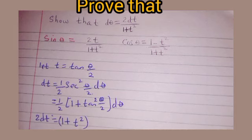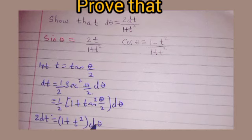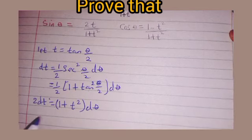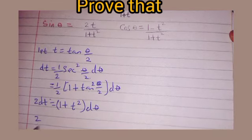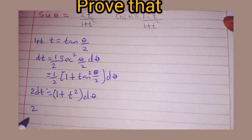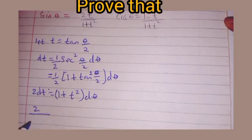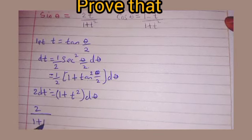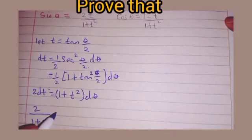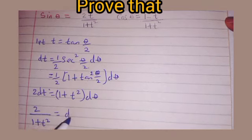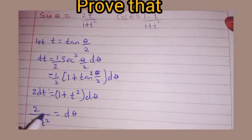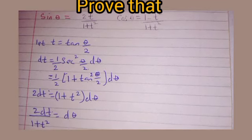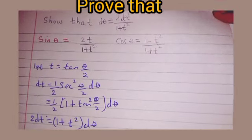Instead of tan²(θ/2) we substitute t, so we get 2dt = (1 + t²) dθ. Dividing both sides by (1+t²) gives 2dt/(1+t²) = dθ. We have now proven the first result.